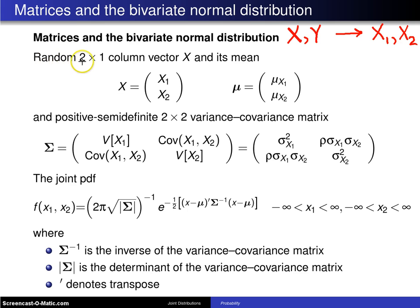So there will be a random 2 by 1 column vector x and its mean. Boldface x will be the bivariate random variables x1 and x2, but now set in a 2 by 1 column matrix. And the means, mu sub x1 and mu sub x2 will also be set in a 2 by 1 column vector.